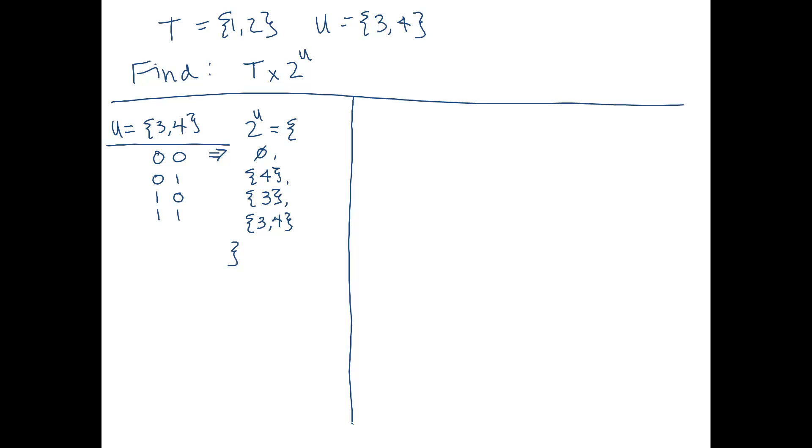Now in step two, we're going to build this Cartesian product. So let's remind ourselves what that looks like. It's going to end up being an ordered pair. And then again, let's give these places some names. Let's call it x and y.